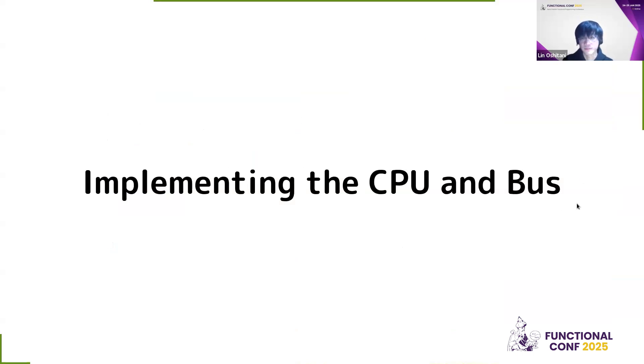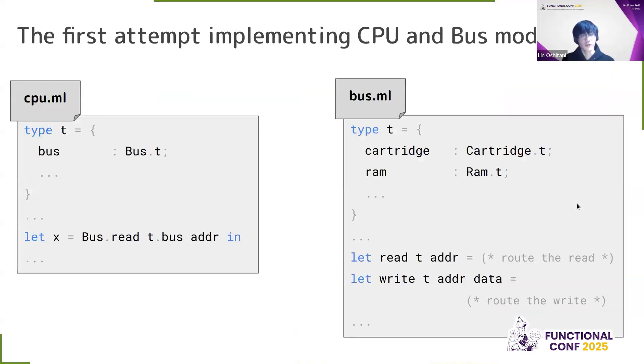How did I go on and implement this? The first attempt of implementing the CPU and bus module is this. First, I implement a CPU module. Within the CPU module, I have a reference to the bus module. And when I want to read and write to the bus, I call the bus.read or bus.write with an address that I want to read and write to. And I have the bus module. And the bus module will have references to cartridge, RAM, and so on. And when I call bus.read or bus.write, it will route the read and write to the appropriate IO device.